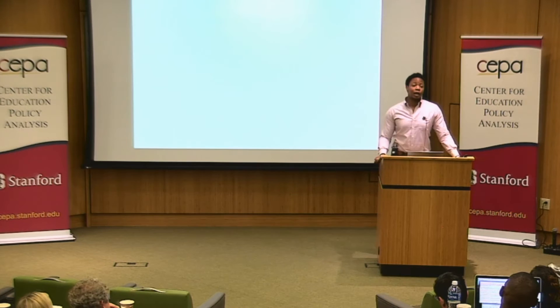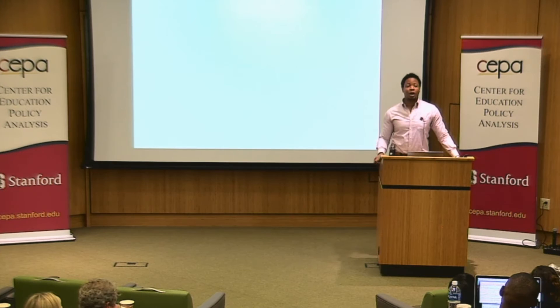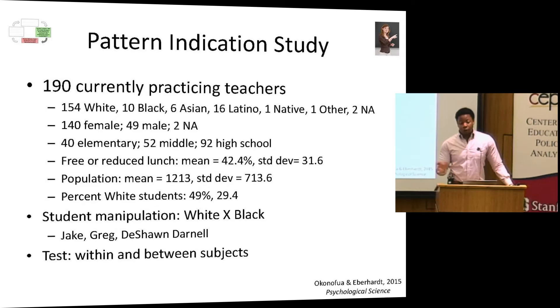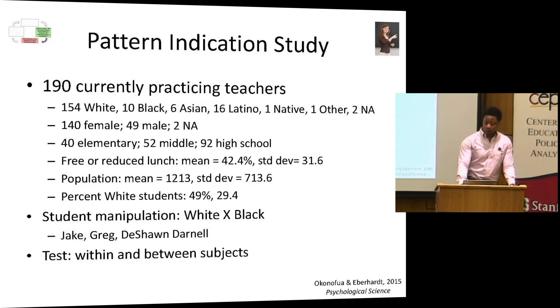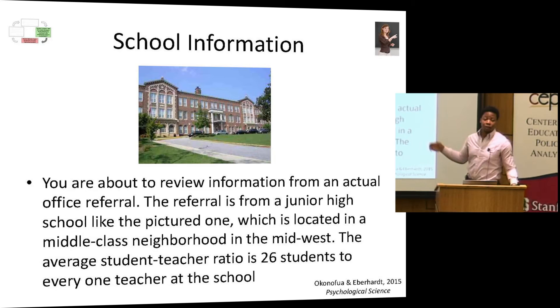We recruited currently practicing teachers from across the country — a sample very close to national statistics. They did an online survey about best practices for discipline. We told them to imagine themselves as a teacher at a school with a one-to-26 student ratio in a middle-income neighborhood — all to control the environment they were imagining. Randomly, half of the teachers read about a black student misbehaving and another half read about a white student misbehaving, manipulated using names that past research has identified as stereotypically associated with black or white children.